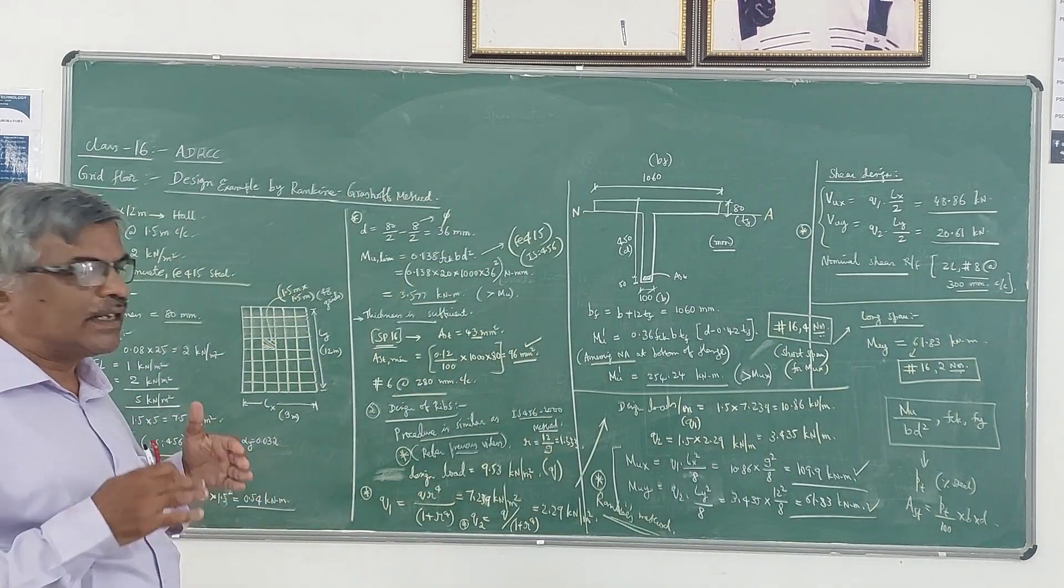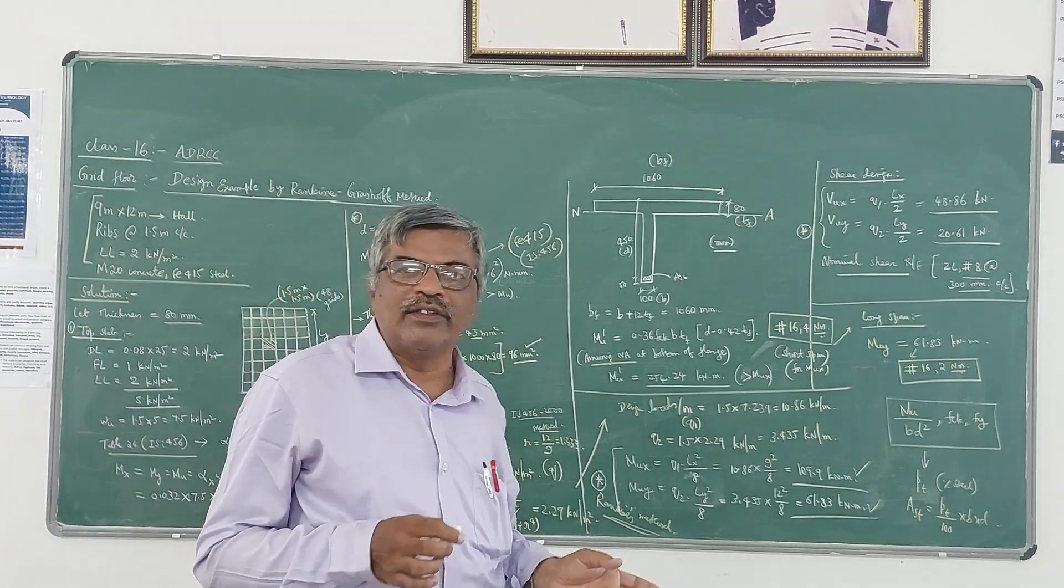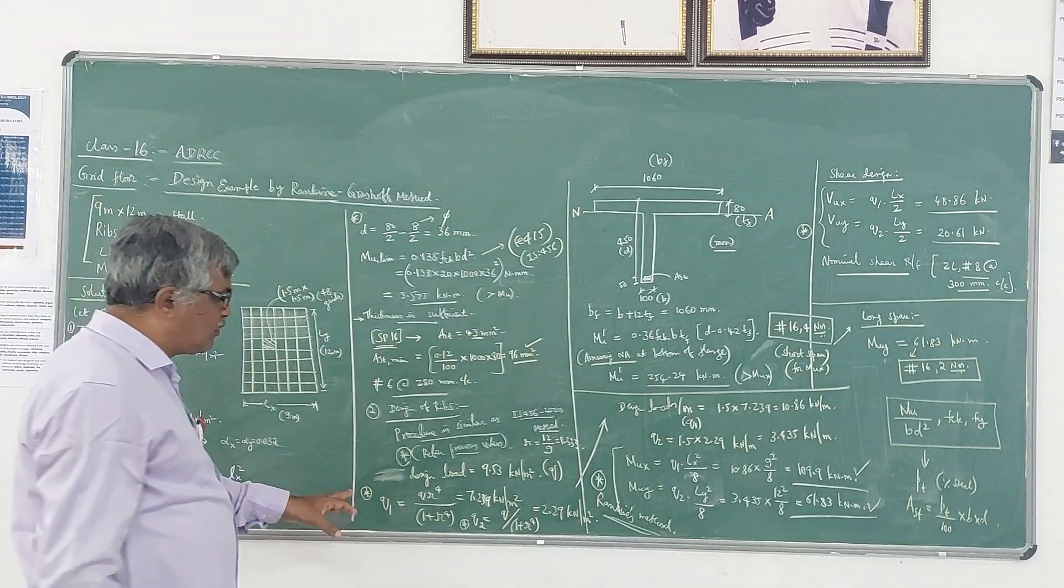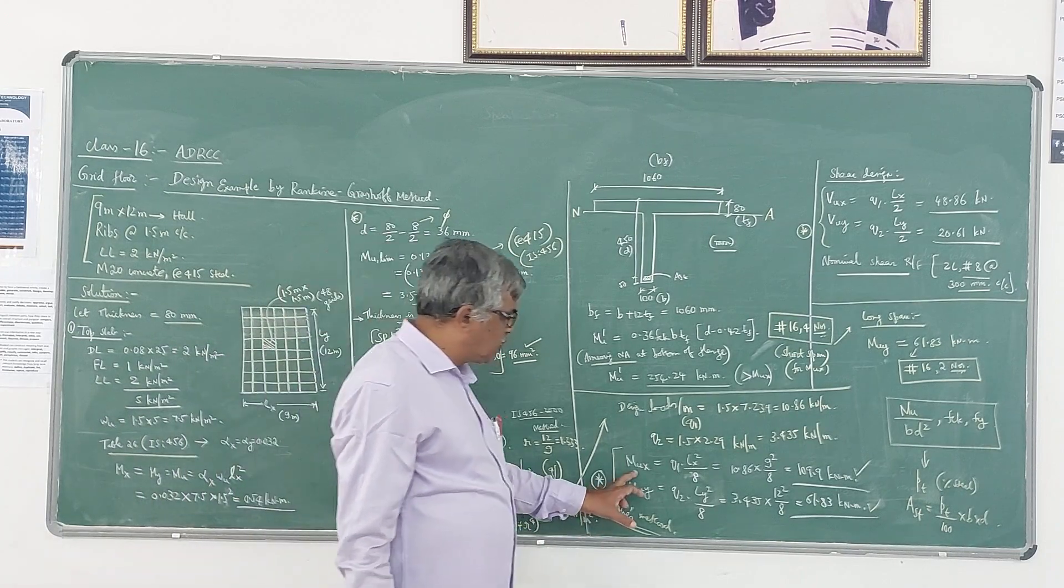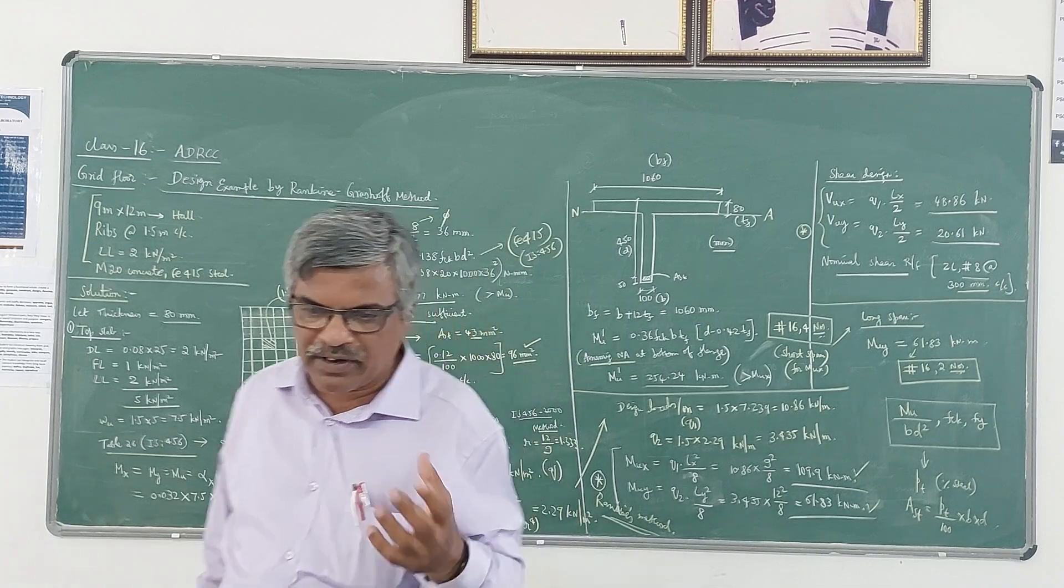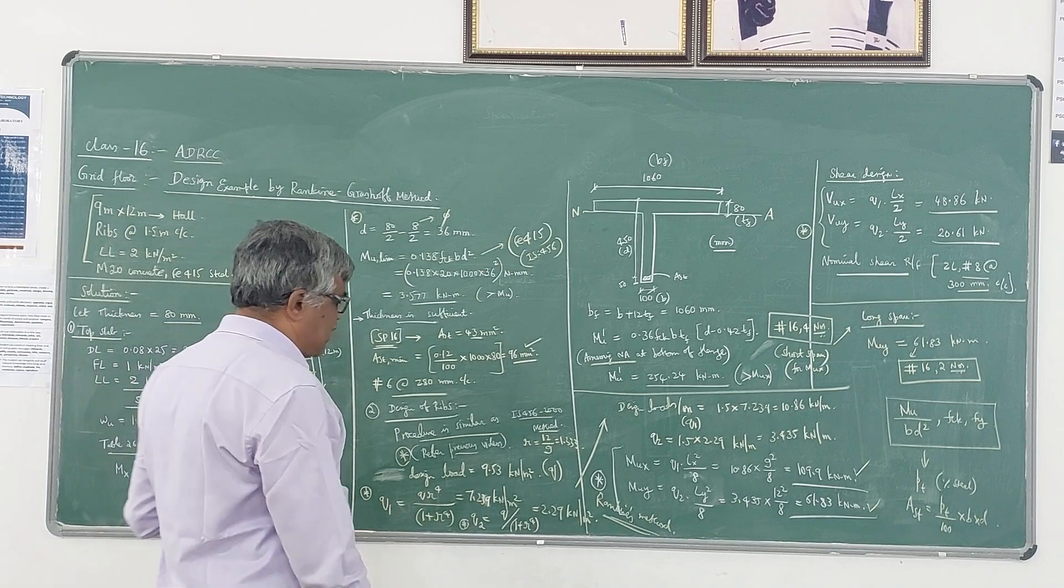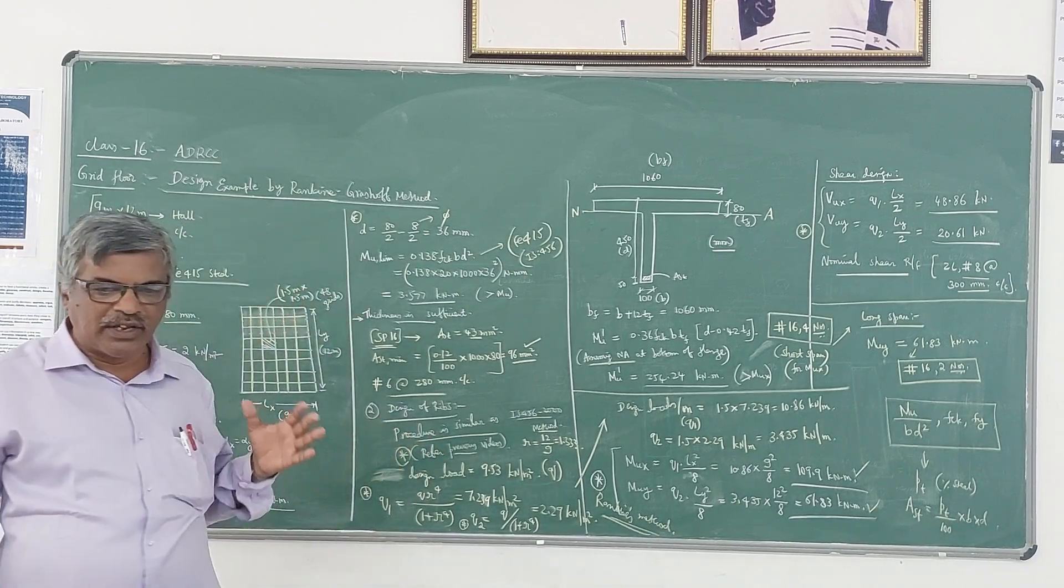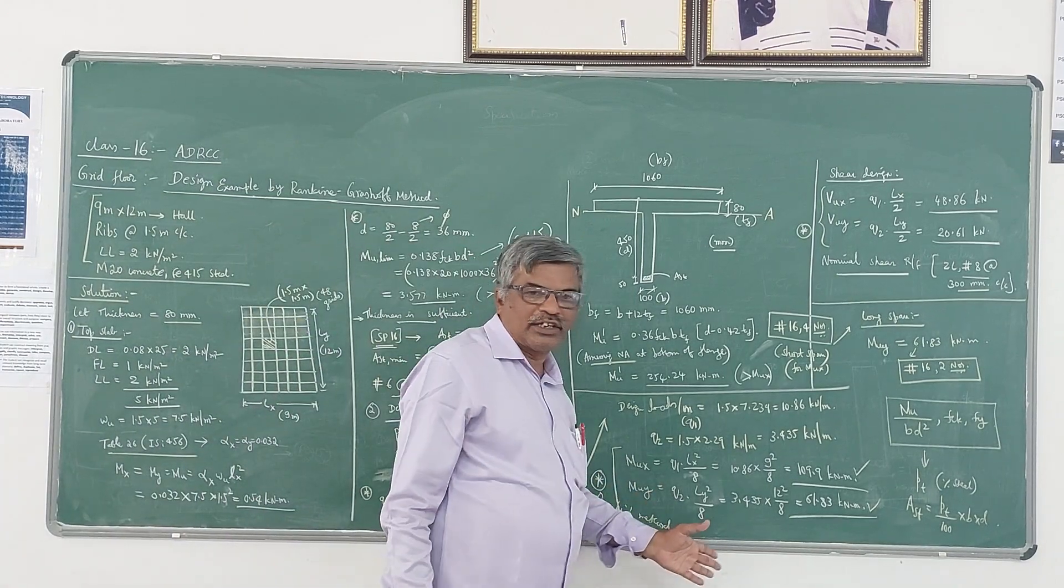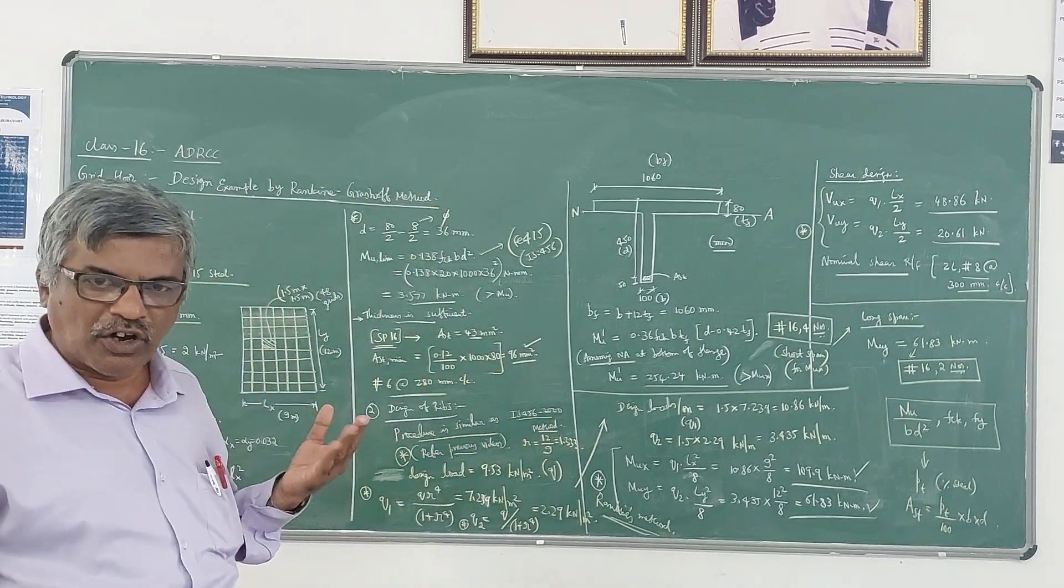Later on you can have the detailing of the T-beam along with this slab, which I had explained in the IS456-2000 method also. The only difference here is the formulas for Q1, Q2, MUX, MUY, VUX, VUY - these things are different in the case of Rankine's method. Whereas in the IS456 method we are using coefficients, here we are using these formulas for calculation of bending moments, and the design is done by using SP16 charts.